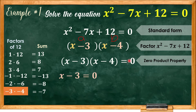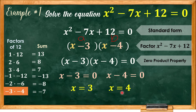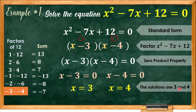Setting x minus 3 equal to 0 and applying the addition property of equality, we get x equals 3. Next, setting x minus 4 equal to 0, we get x equals 4. Therefore, the solutions are positive 3 and positive 4.